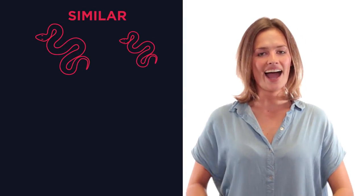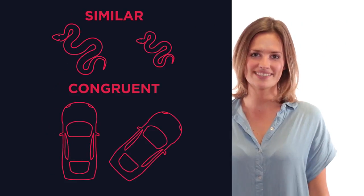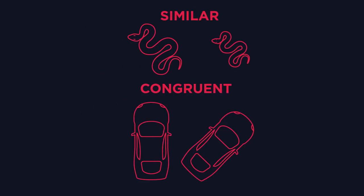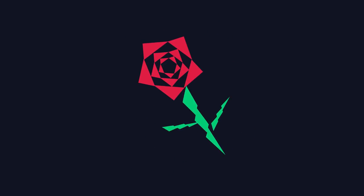In this video we're going to look at similar and congruent shapes. Similar and congruent shapes are seen throughout design and make it much easier. In this image, only two shapes have been drawn, and then by changing the size and orientation of these shapes, we have a detailed design.